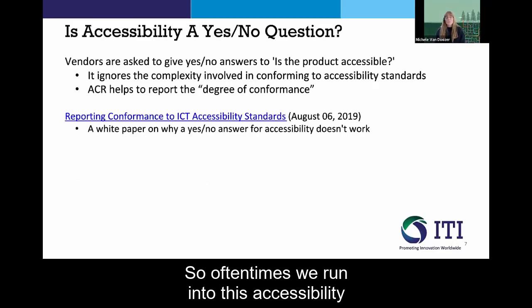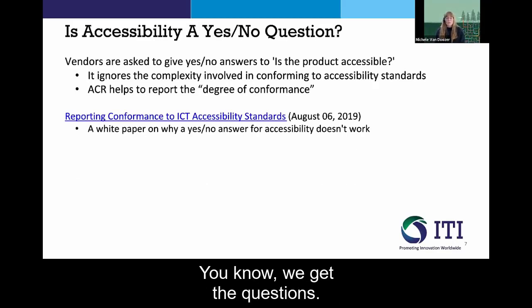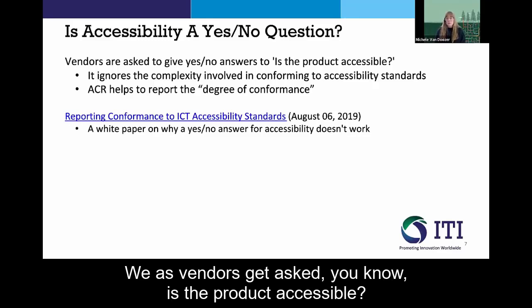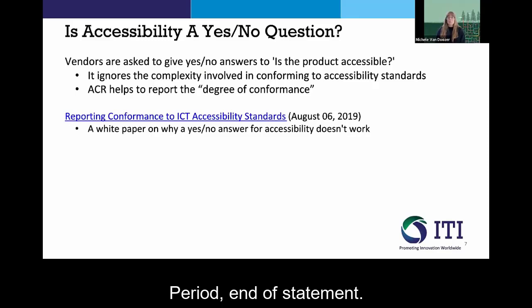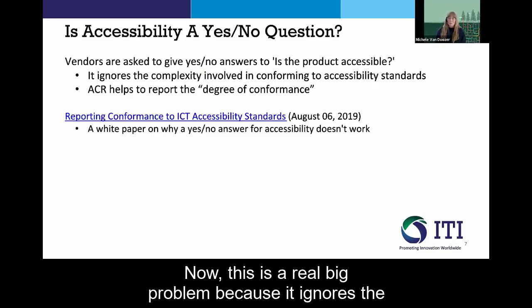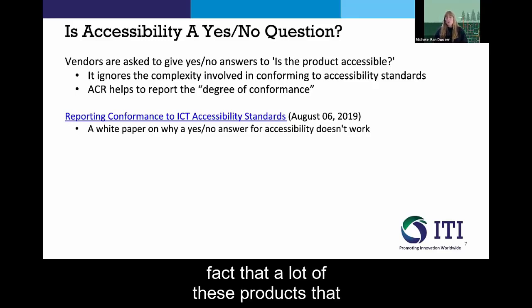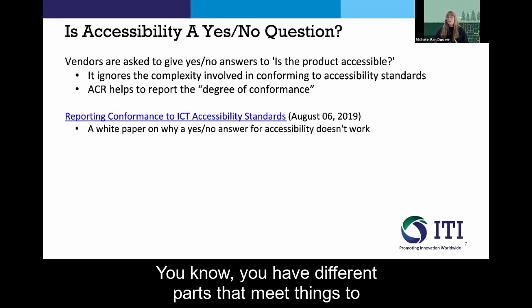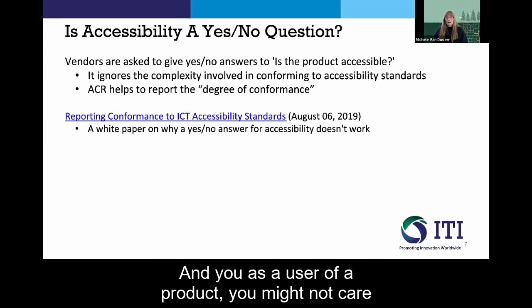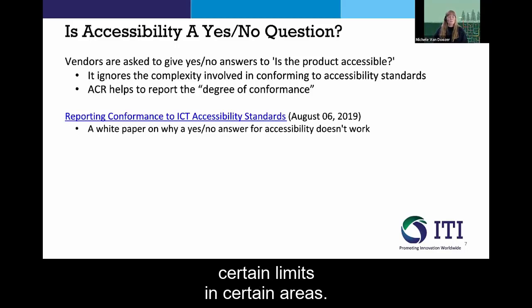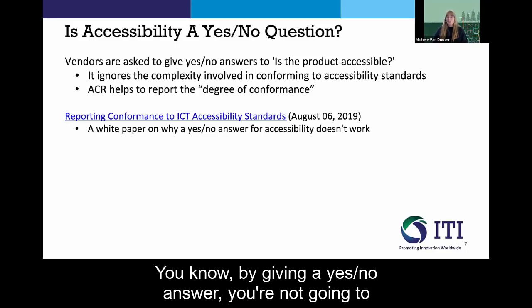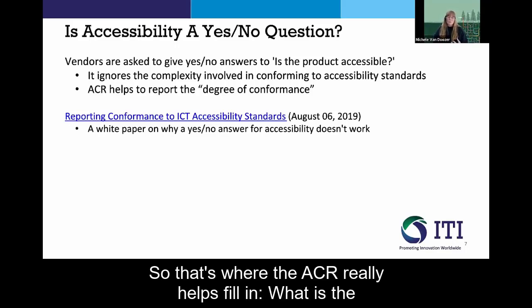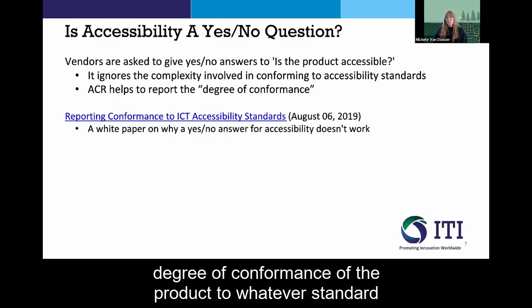We often run into a situation where accessibility is treated as a yes/no question. Vendors get asked, 'Is the product accessible? Yes or no?' with no room for additional information. This is a real problem because it ignores the fact that many products people buy are complex — different parts meet requirements to different levels. As a user, you might not care that certain sections have limitations in certain areas. A yes/no answer won't give you all that information. That's where the ACR really helps — it fills in the degree of conformance of the product to whatever standard you're looking for.